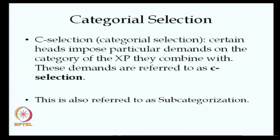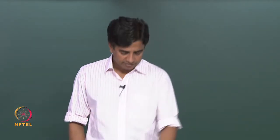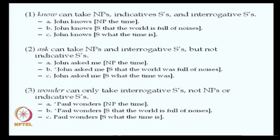Some verbs select for an NP, and other times a verb selects for more than an NP. Let us look at the verb 'know' — it takes an NP as its argument. In the sentence 'John knows the time,' the argument of the verb 'know' is 'the time,' which is an NP.